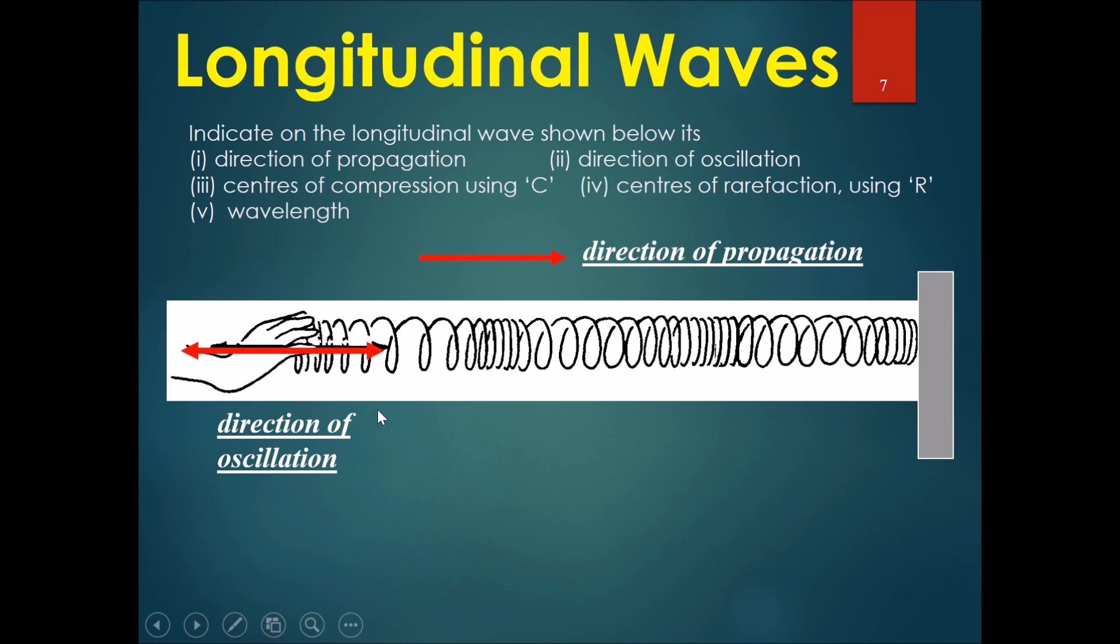Therefore, these directions are all the same. You can see at this point, when I write C here, it's exactly in the middle of the compressed parts of the spring. These are the points of compression. These parts over here are the middle of the expanded parts of the spring, called the centers of rarefaction.